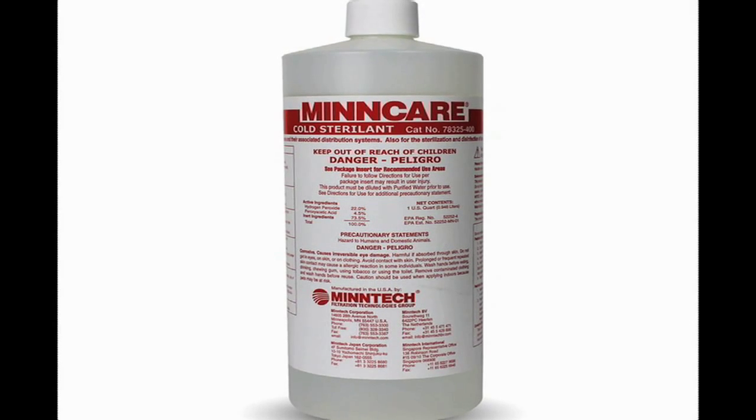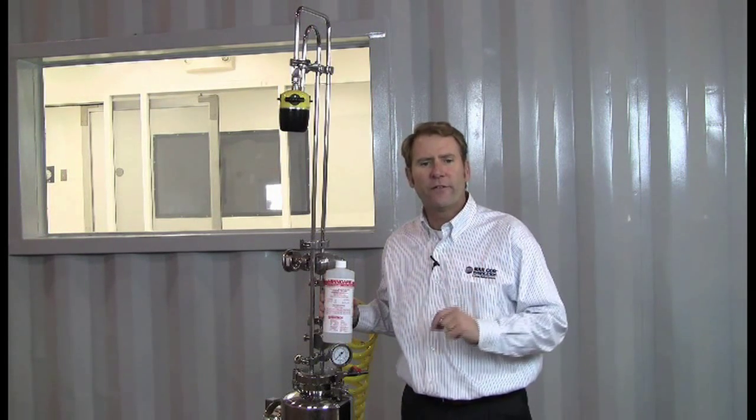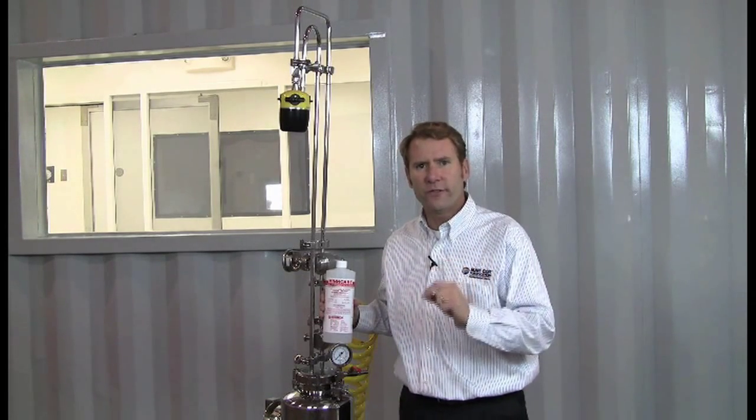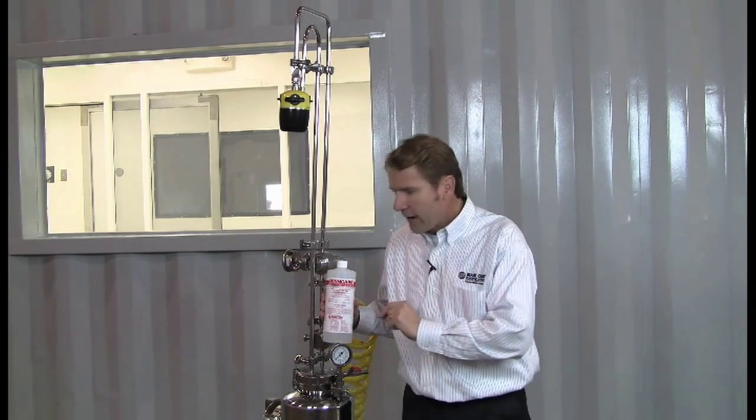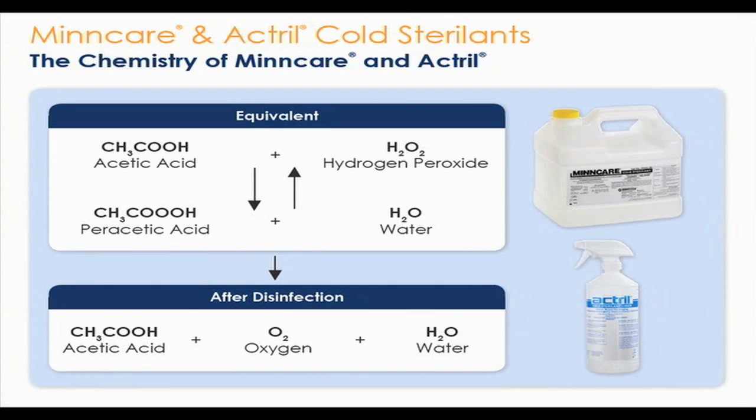MinCare is 22% hydrogen peroxide, 4.5% peracetic acid. It is a concentrated solution that you need to dilute down. When you're using it in the dry fog machine, dilute it down to between 3 and 10%. That percentage that you choose will help you in the log reduction of your microorganisms in your clean area.